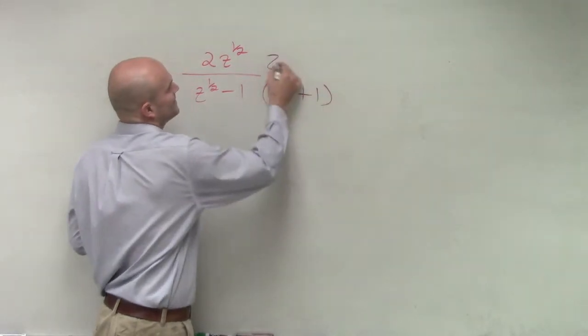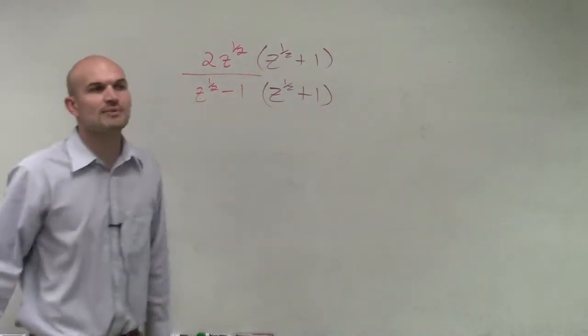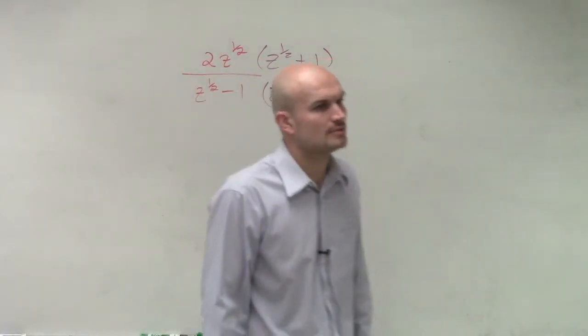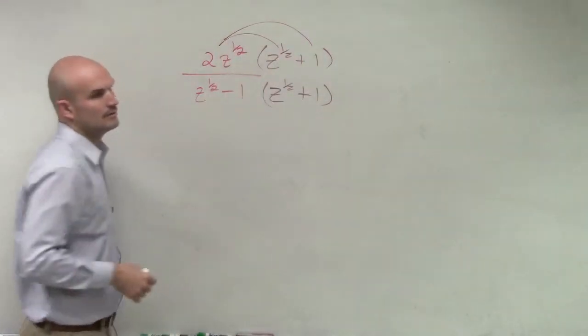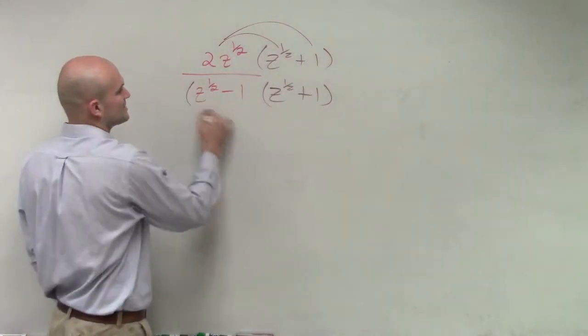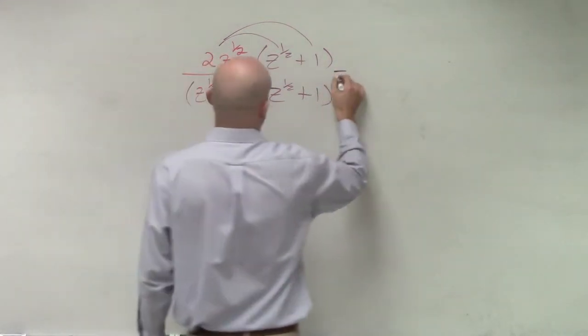And that's exactly, ladies and gentlemen, what we're going to want to do. So you're going to multiply by the conjugate z to the 1 half plus 1. Then we apply distributive property. And then here, this is going to be a difference of two squares. So when we apply distributive property over here,